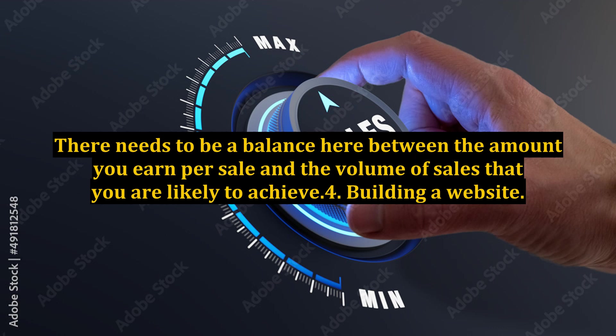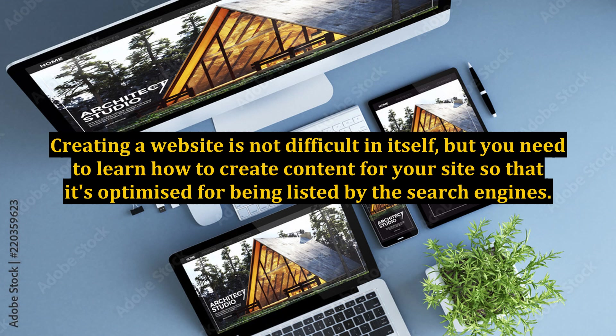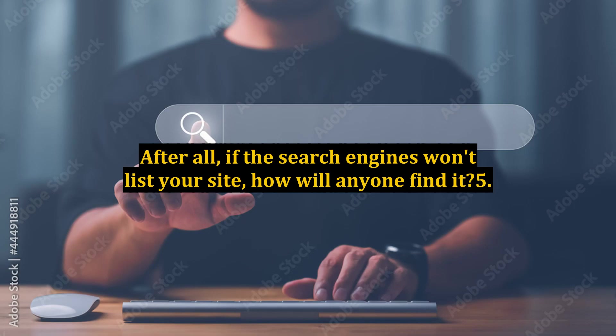4. Building a Website. Obviously, you'll need a platform from which to sell your affiliate products, and a blog or website is the easiest to create. Creating a website is not difficult in itself, but you need to learn how to create content for your site so that it's optimized for being listed by the search engines. After all, if the search engines won't list your site, how will anyone find it?